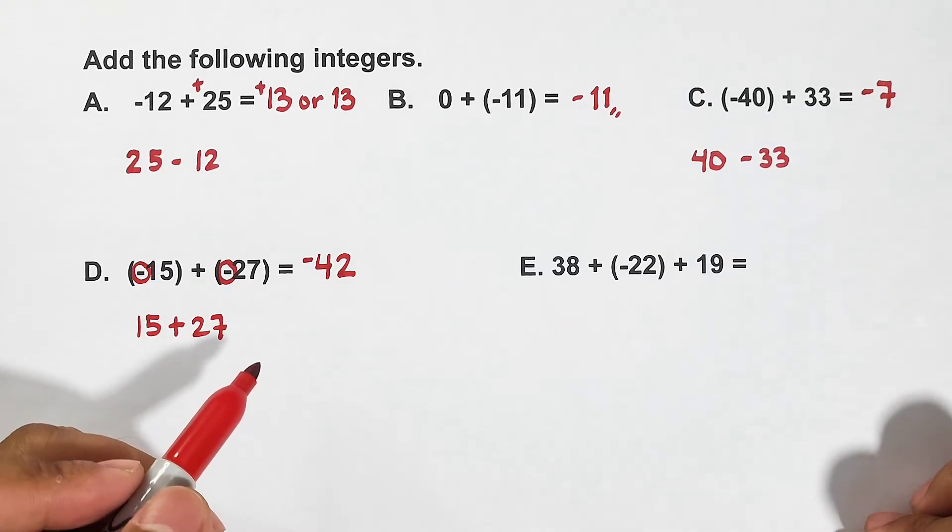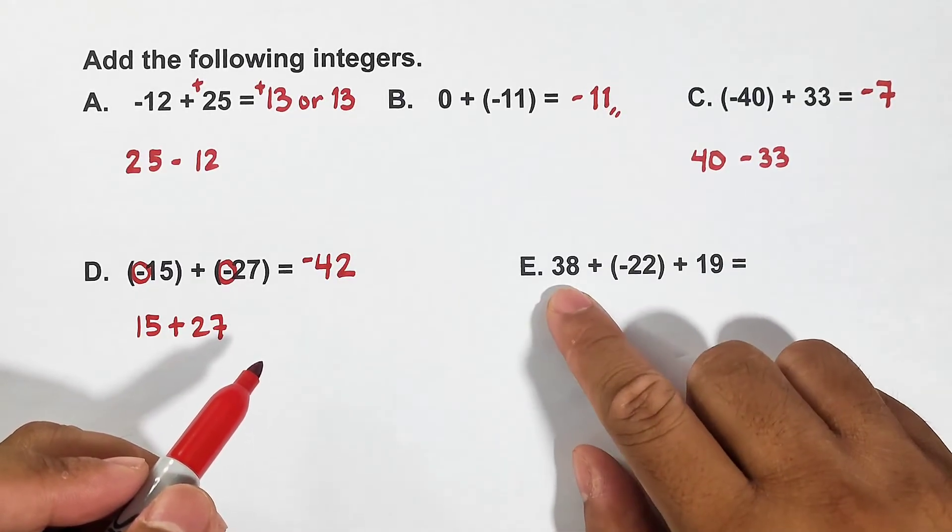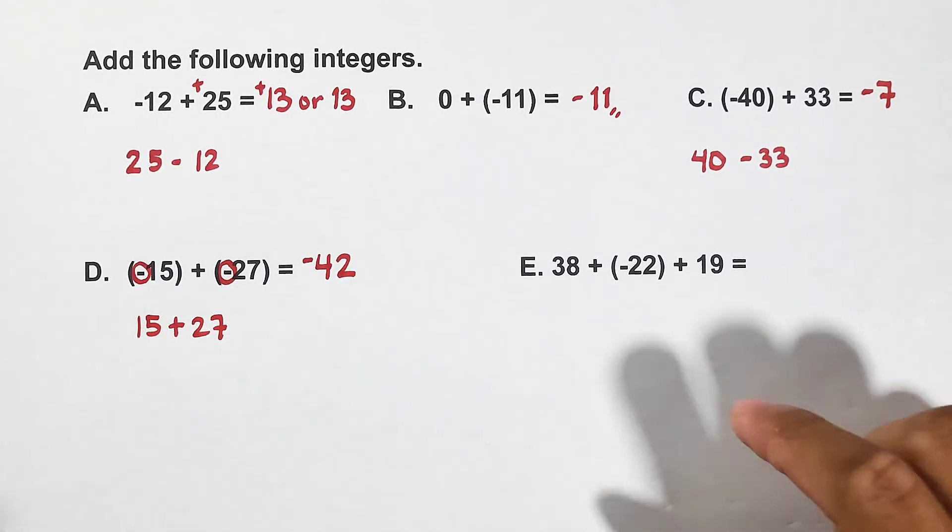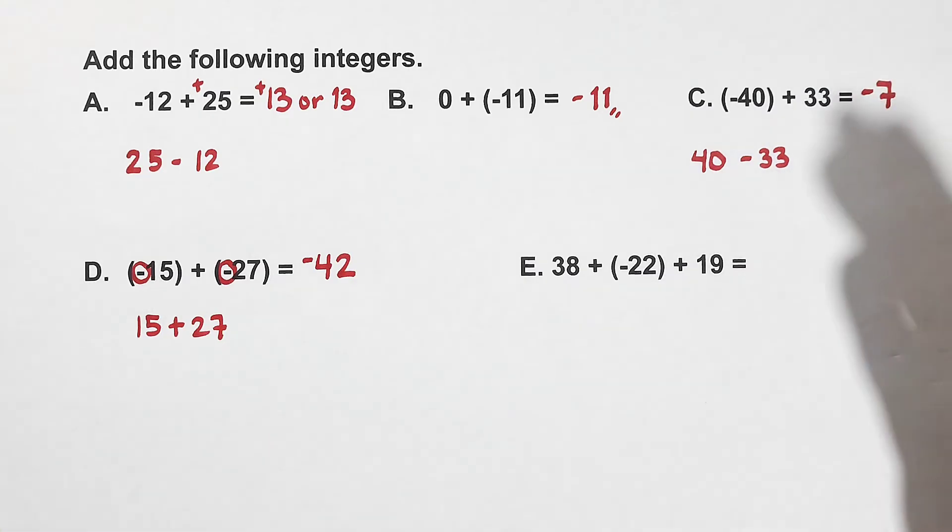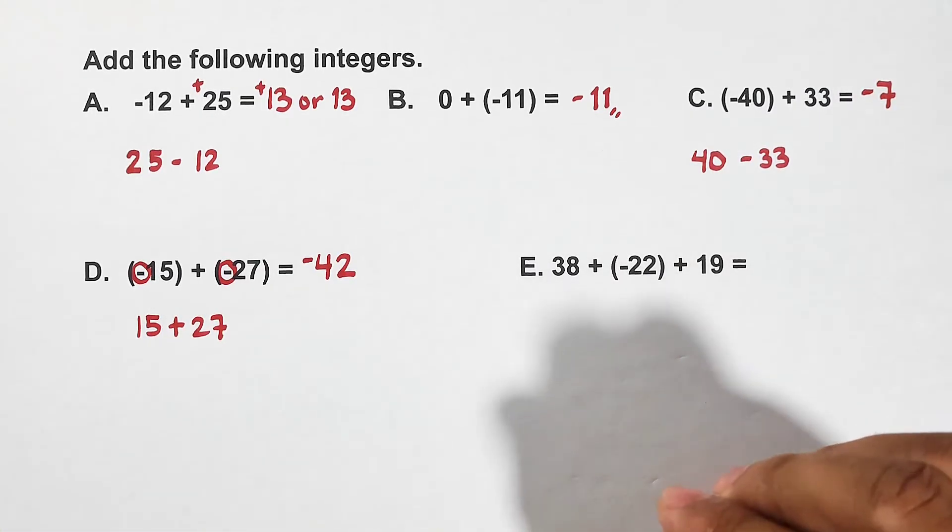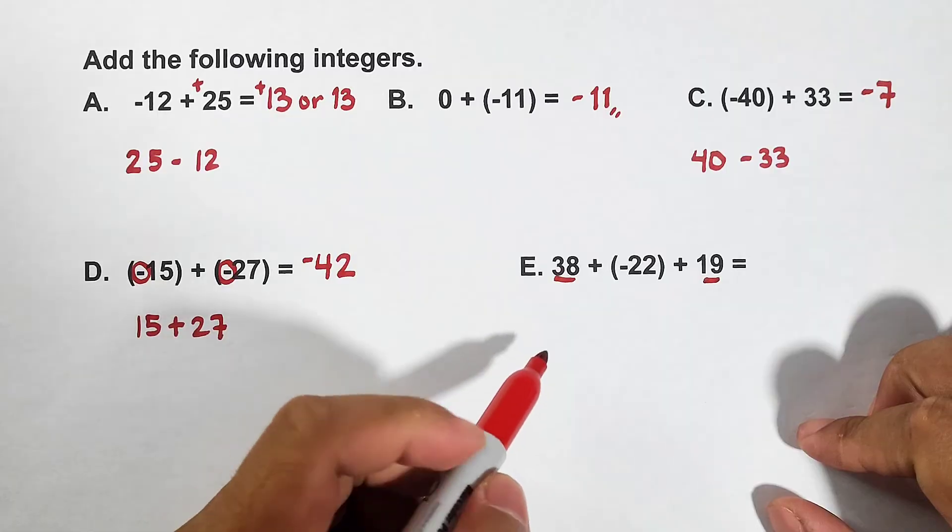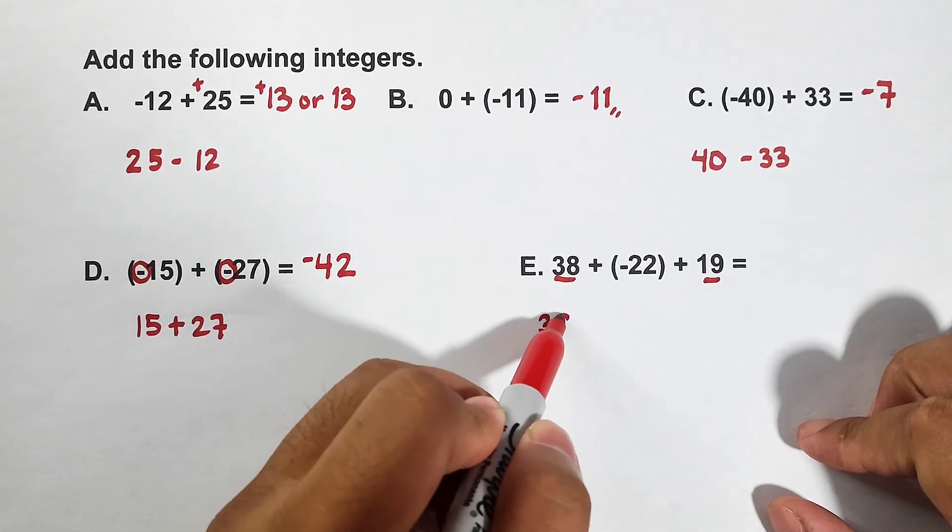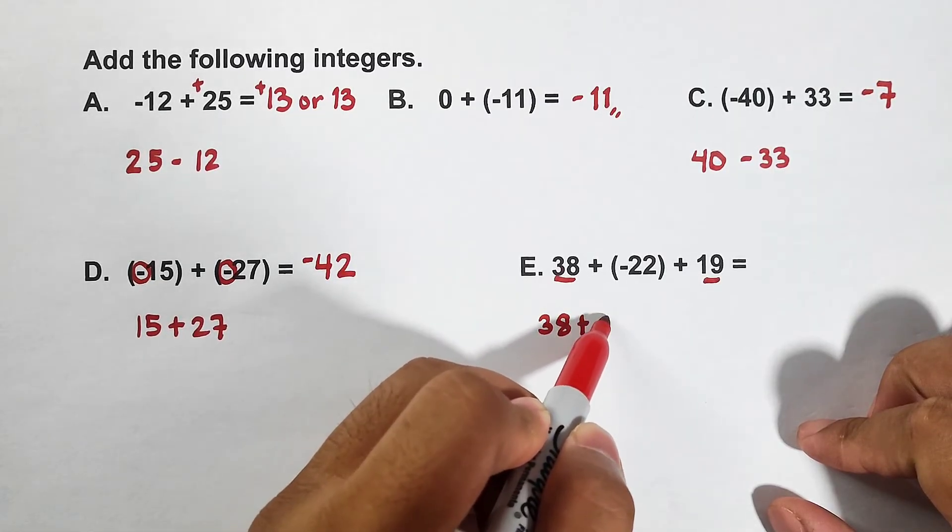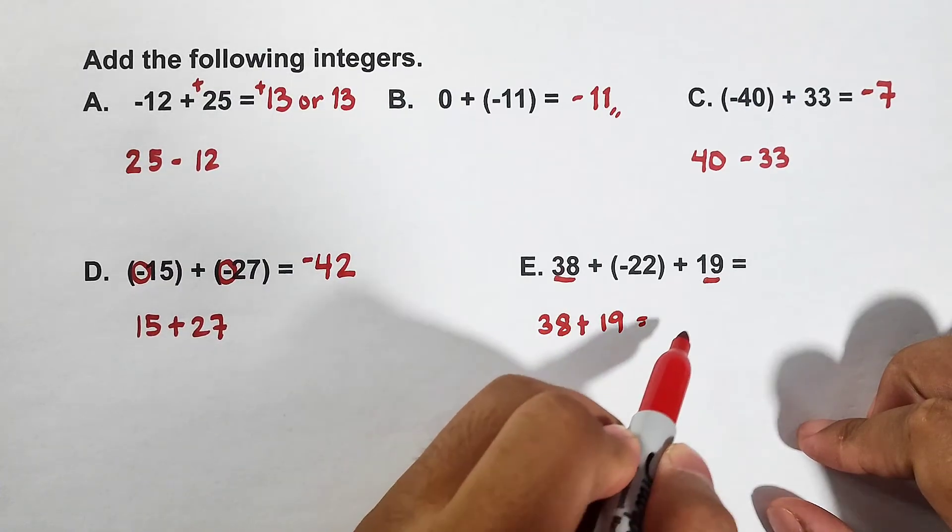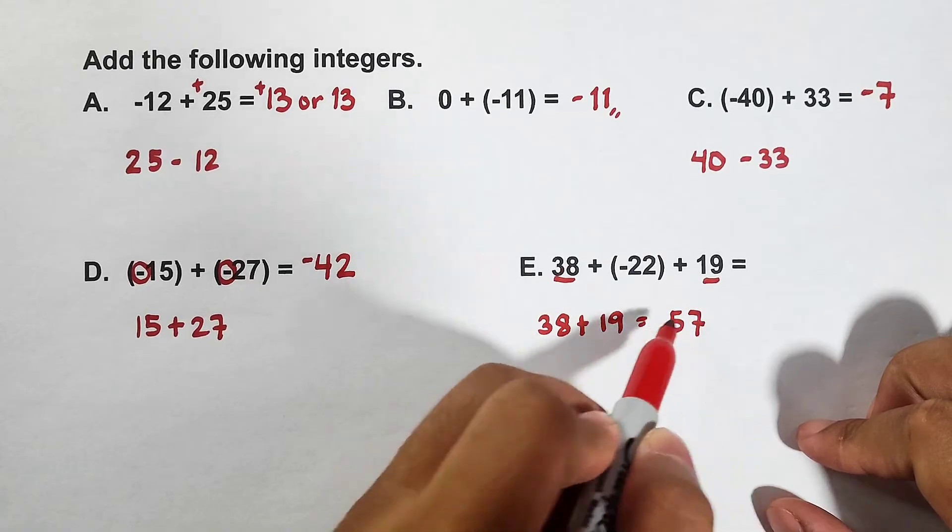Let's move on with letter E. 38 plus negative 22 plus 19. So in this case guys, what you need to do, my strategy here, since there are three integers, I will go first with the two integers with the same sign. This one and this one. So that is 38 plus 19. The answer is what? 57.